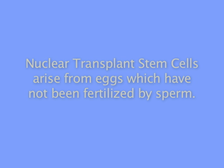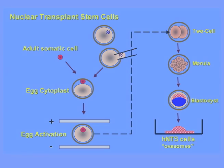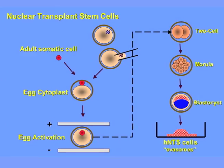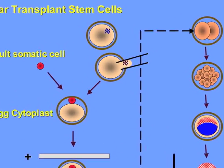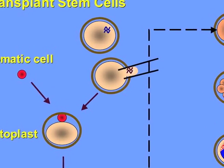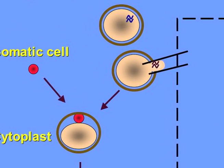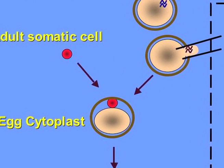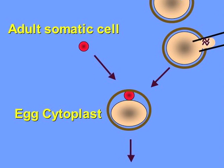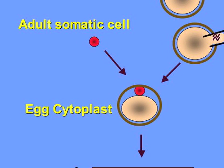Nuclear transplant stem cells arise from eggs which have not been fertilized by sperm. Instead, all the genes are removed from that egg, and all of those genes are replaced with the genes from an adult cell.